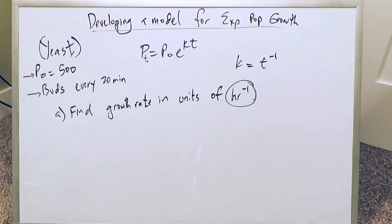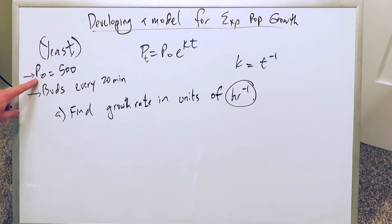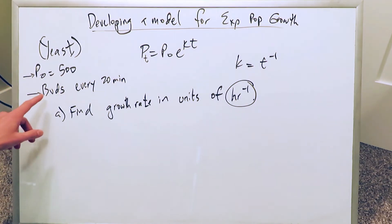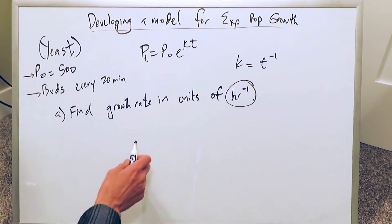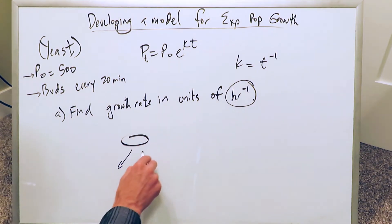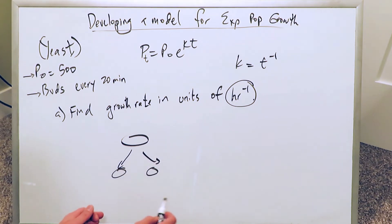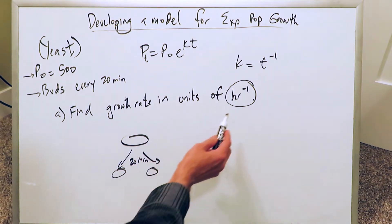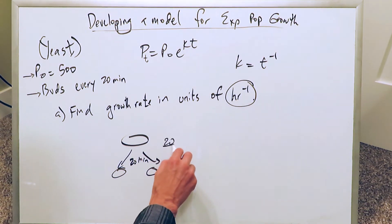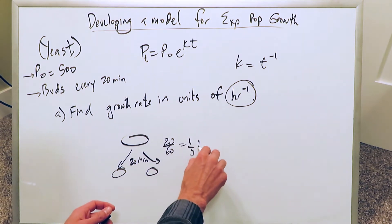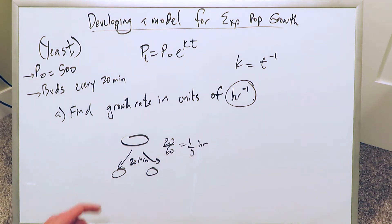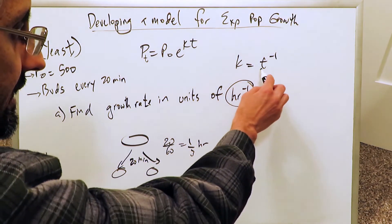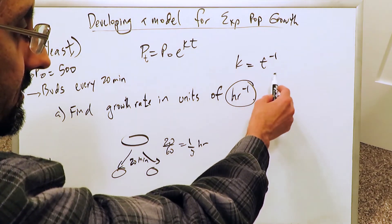Now for the actual application. We have this formula and we are looking at a specific organism — a yeast — with an initial population count of 500. It buds every 20 minutes, meaning it doubles. 20 minutes divided by 60 gives one-third of an hour, so in one-third of an hour it doubles. We have to find the growth rate k in units of hours to the power of minus one.